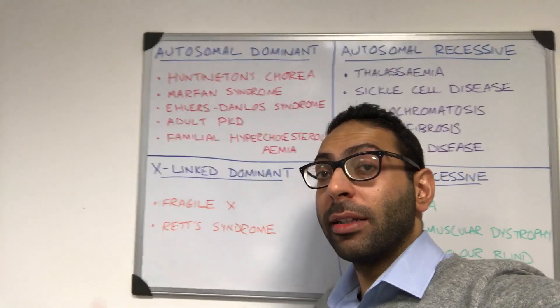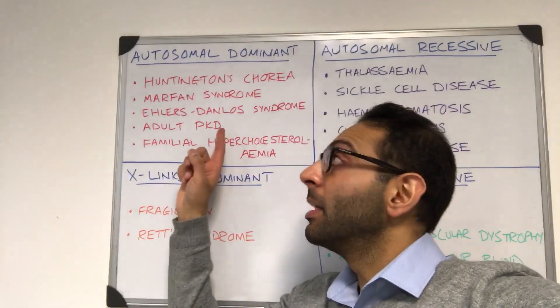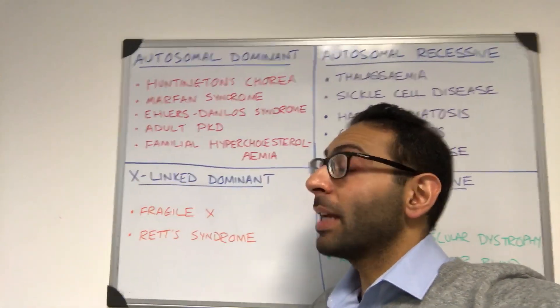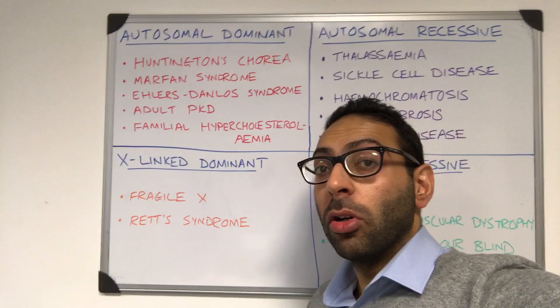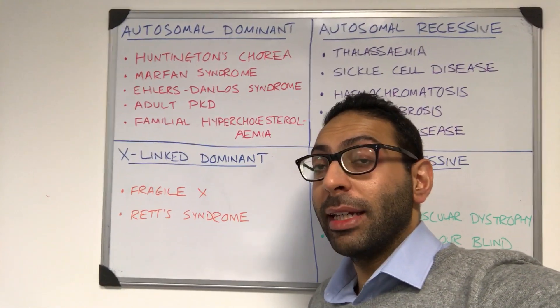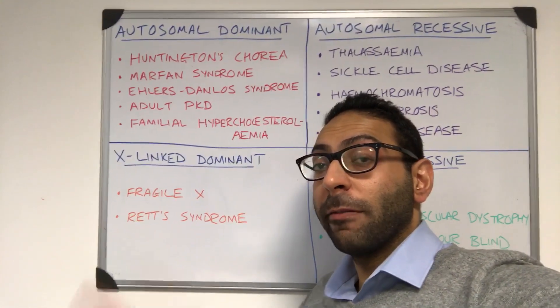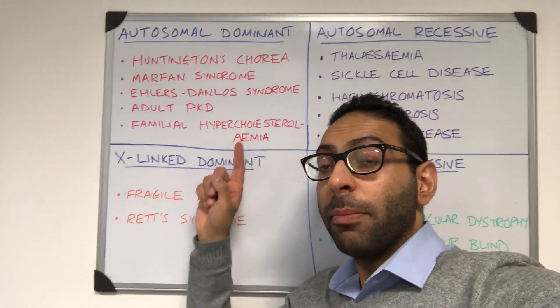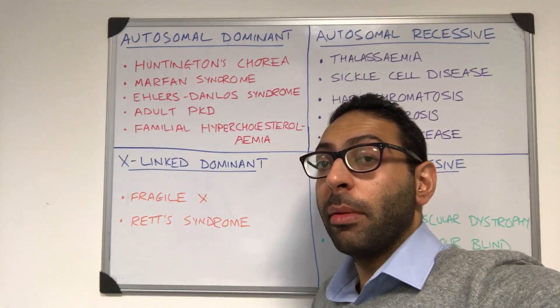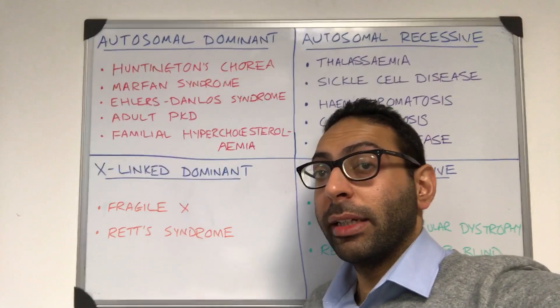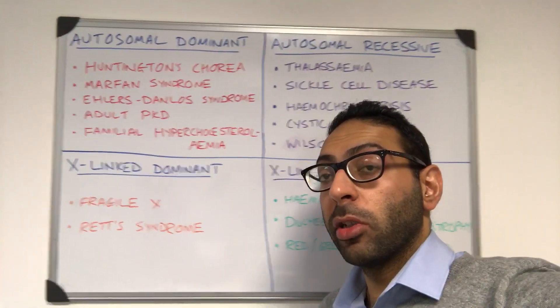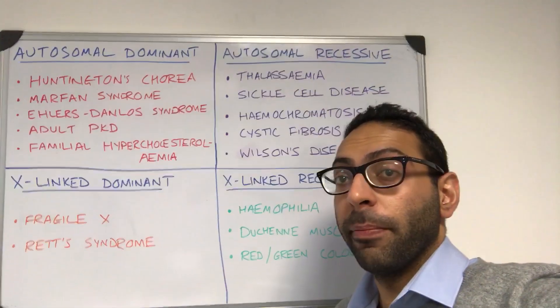So things like Huntington's disease, things like Marfan syndrome, things like Ehlers-Danlos syndrome, things like adult PKD or polycystic kidney disease, and things like familial hypercholesterolemia. Remember, you need one affected gene to have the condition in an autosomal dominant condition.